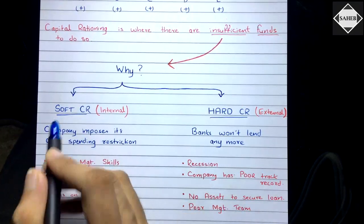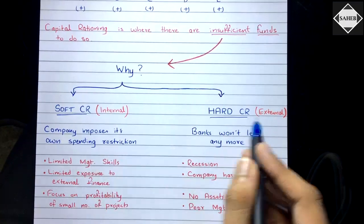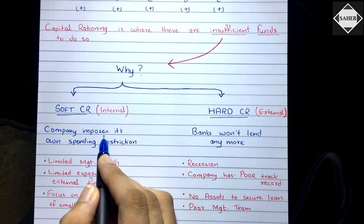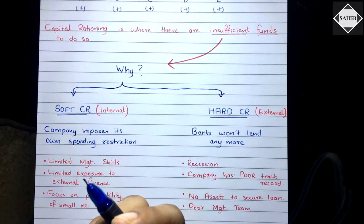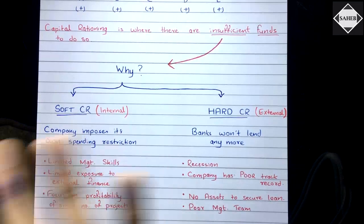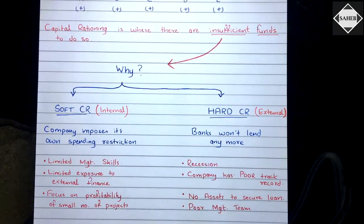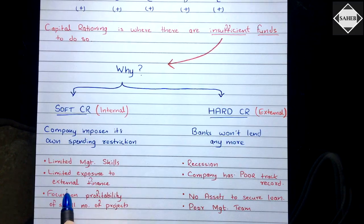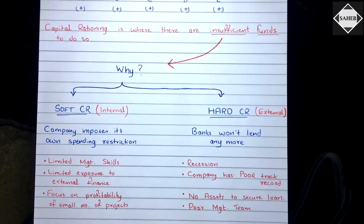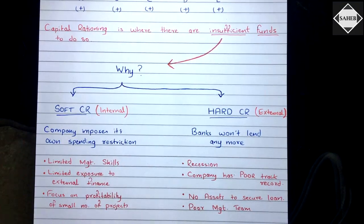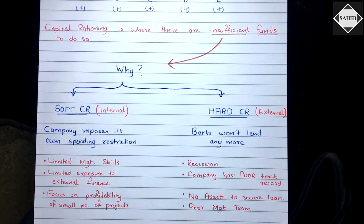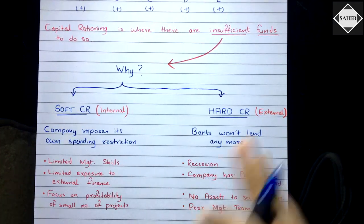There are two types of reasons for insufficient funds: soft capital rationing and hard capital rationing. Soft capital rationing refers to internal reasons — the company imposes its own spending restrictions. Management places a limit on the finance department, perhaps due to limited management skills, a desire to avoid raising external debt finance, or a preference to focus on a small number of projects to increase their profitability.